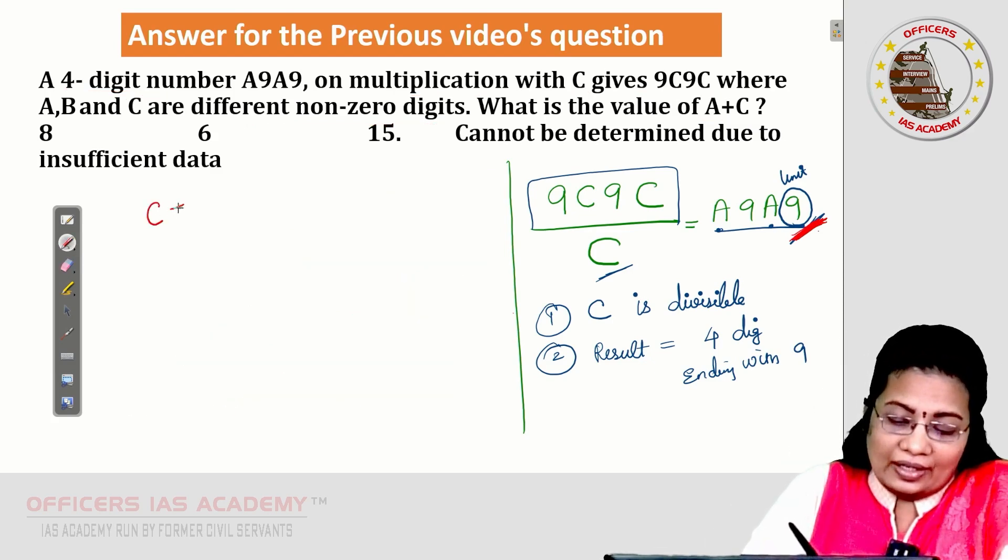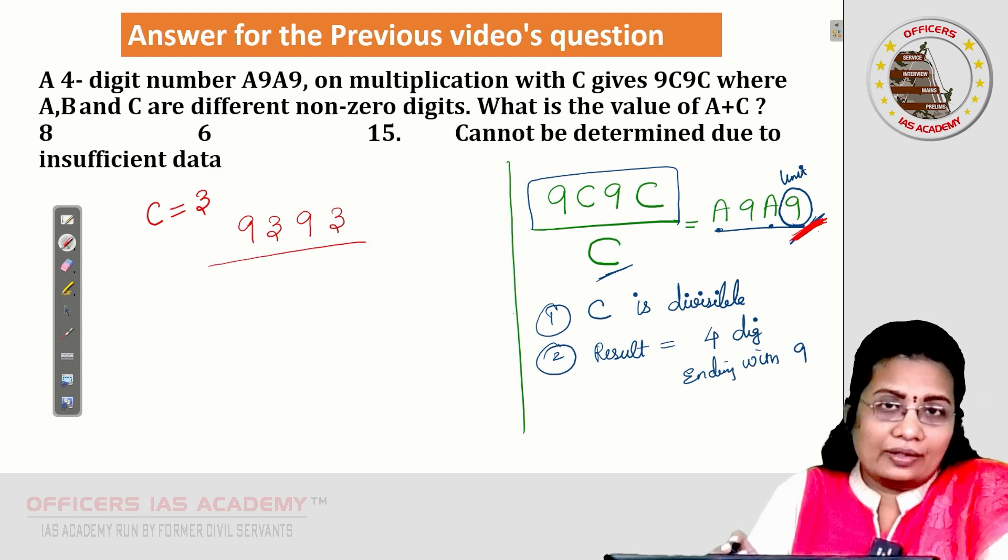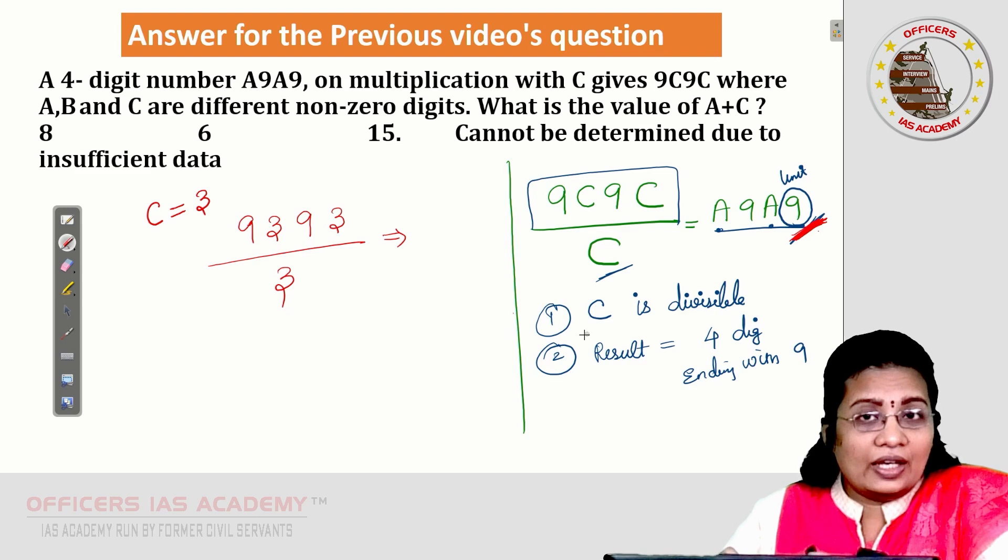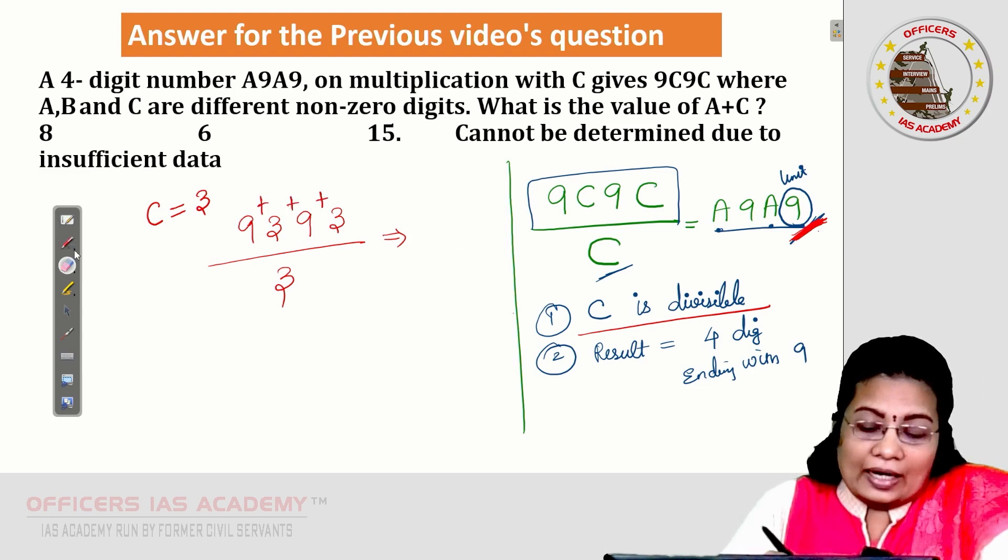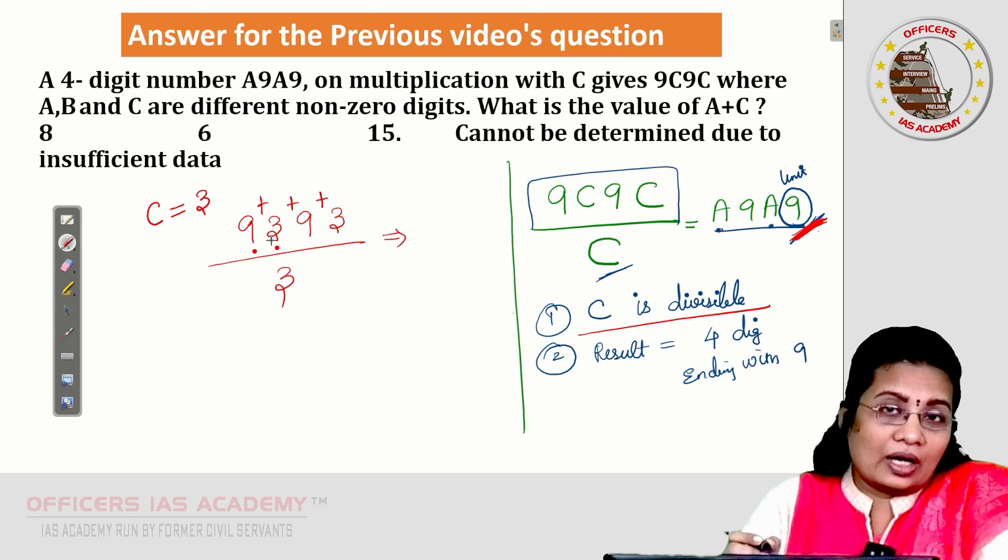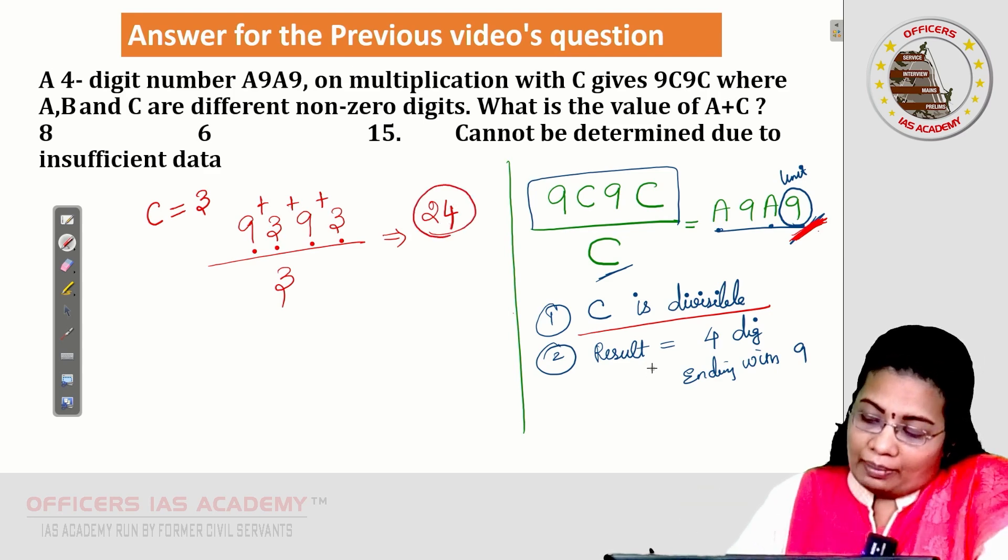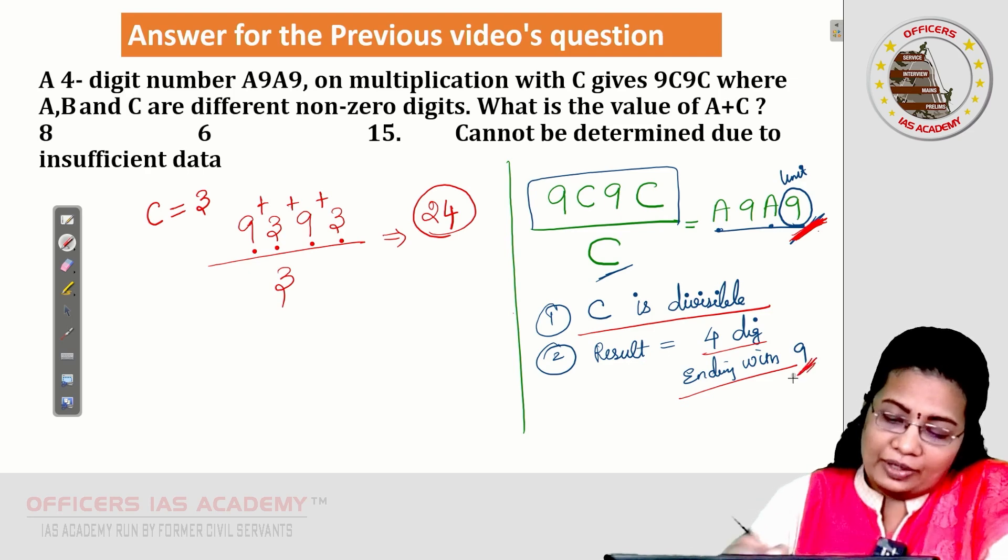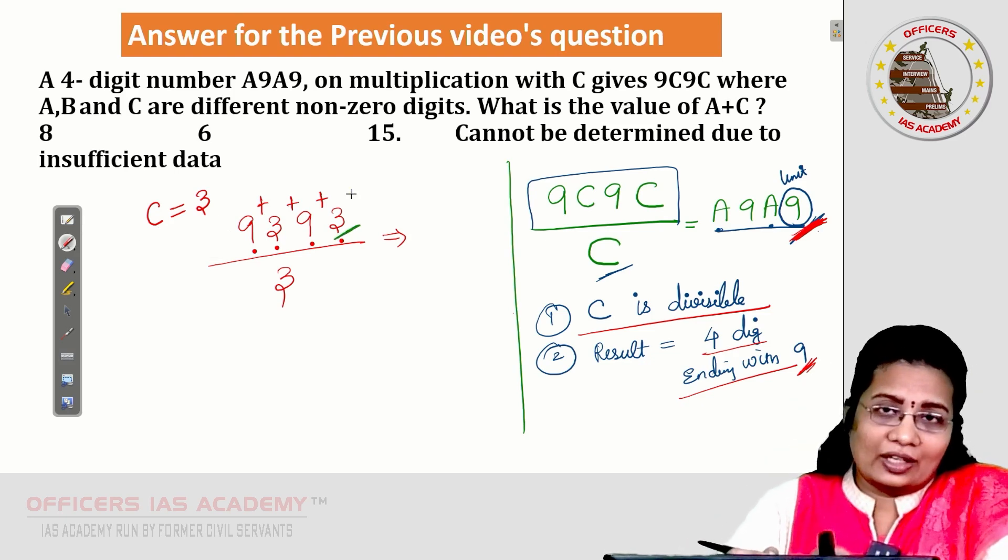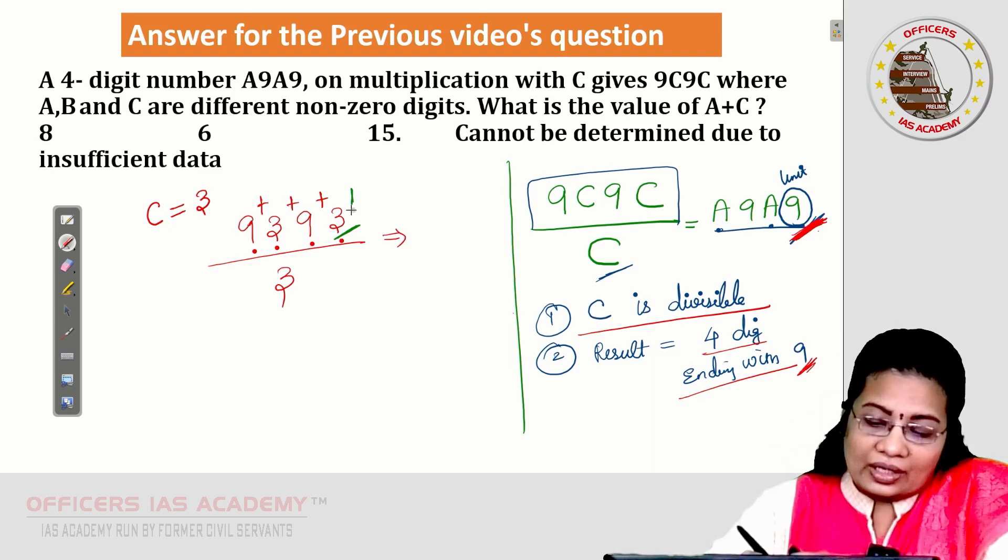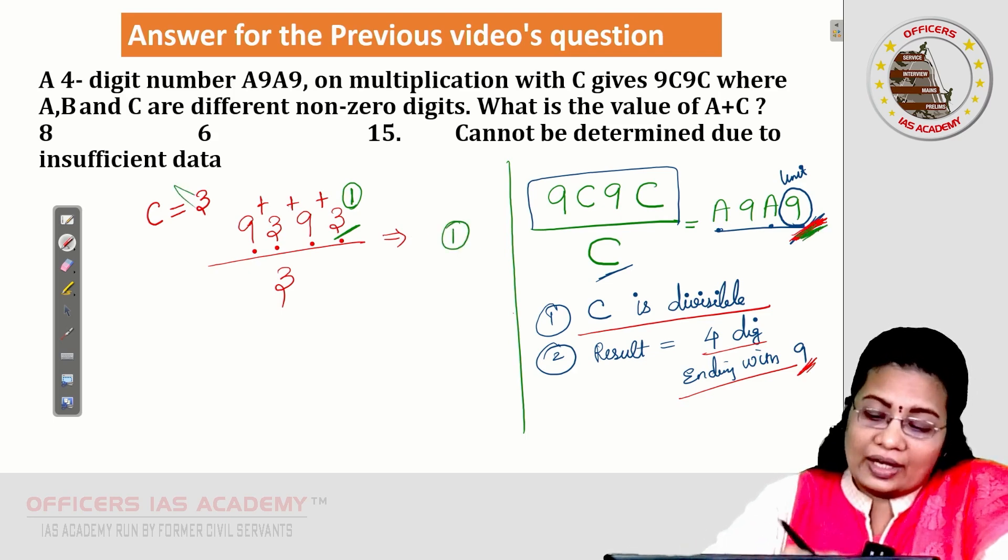Now, case 3. Let me take C is 3. What will happen? I want to substitute 3 in the place of C. While dividing by 3, what am I getting? See, first condition: C must be divisible in that number. So, 3 must be divisible in that. I can add up all the things. 9 plus 3, 12. 12 plus 9, 21. 21 plus 3, 24. So, this 24 is divisible by 3. Okay. But I need a result ending with 9. Let me check where I will be getting 3 in the 3 multiplication table. Only 1. Only with 1. 1 into 3, 3. 2 into 3, 6. Like that. Only 1 gives us 3 at the ending number. So, here 1 is not equal to 9. We expect 9 here. So, case 3 also eliminated.